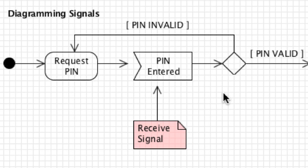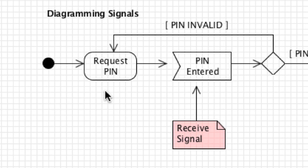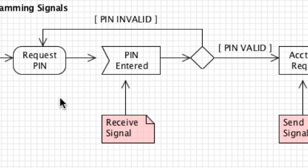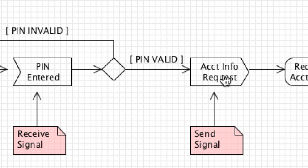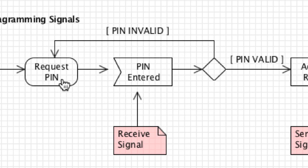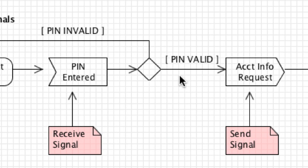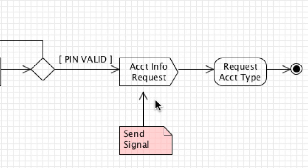The final element is diagramming signals. Triggers are represented with a receive signal icon, and transition behaviors are represented with a send signal icon. In the example, the system is in the 'request PIN' state, a PIN is entered — represented by the receive signal — and if the PIN is valid we move to a send signal called 'account information request,' which transitions to the 'request account type' state. That covers the basics of state machine diagrams.